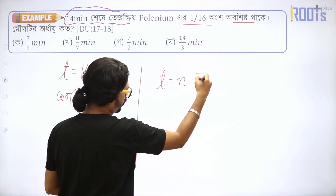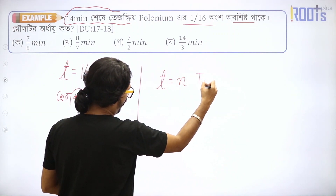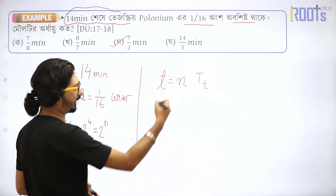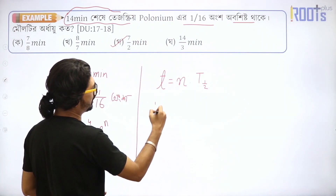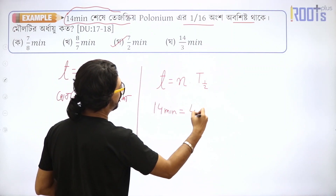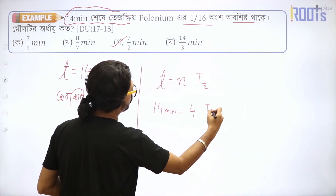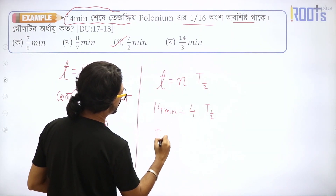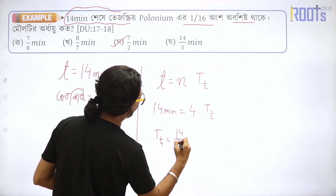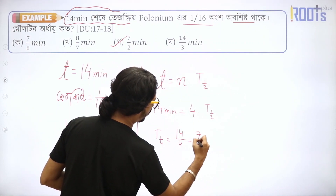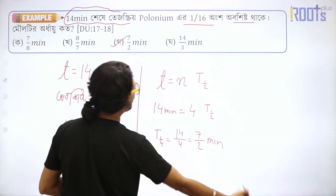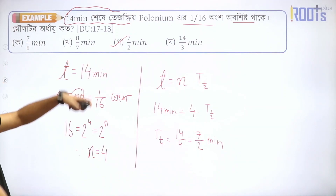Now let's use the shortcut: t equals n into t-half. So 14 minutes equals 4 into t-half. Therefore t-half equals 14 divided by 4, which is 7/2 minutes — that is 3.5 minutes.